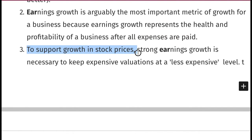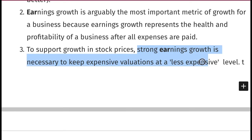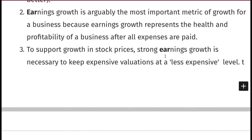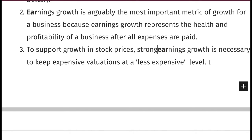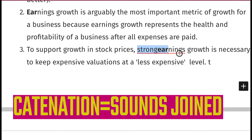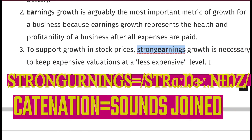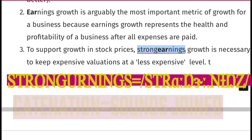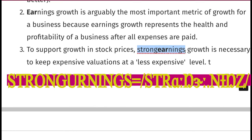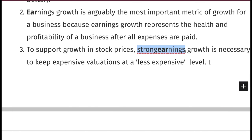Another example sentence: to support growth in stock prices, strong earnings growth is necessary to keep expensive valuations at a less expensive level. Here the word 'strong' precedes 'earnings,' so again we can use catenation — we end up saying 'strong earnings.' To support growth in stock prices, strong earnings growth is necessary.